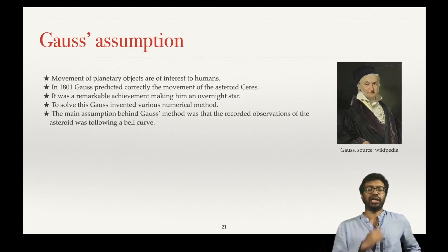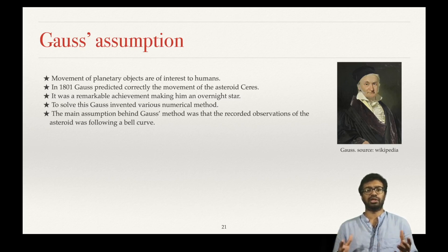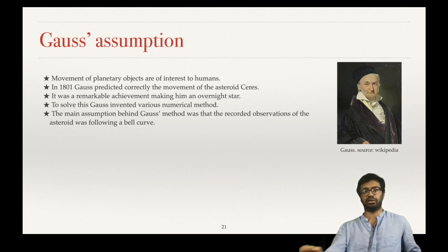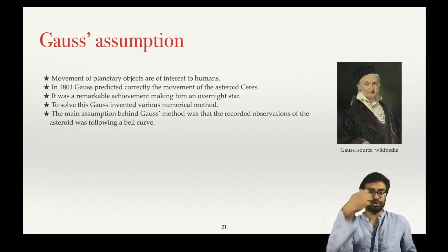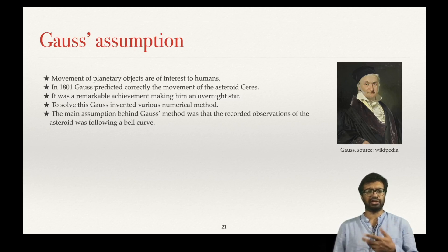What we are interested in is the one main assumption Gauss made, which is going to connect to our bell curve. To predict the movement of the asteroid, Gauss had to look at historical data — at each time, where was this asteroid. People had recorded these positions for the last few years, and Gauss looks at this data and tries to predict the path. This would be called a curve fitting problem in a machine learning course.